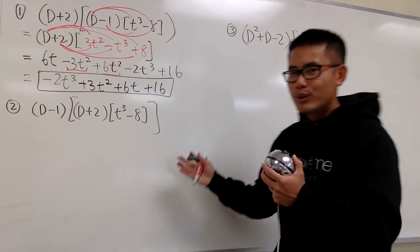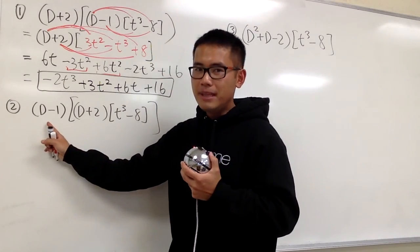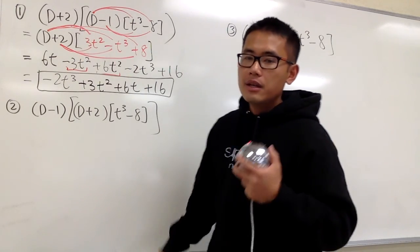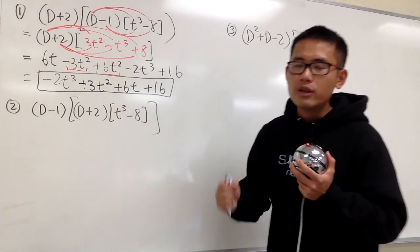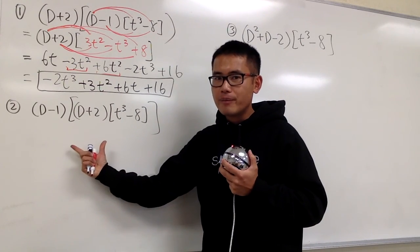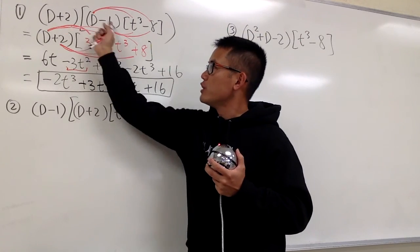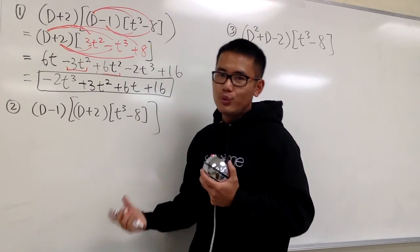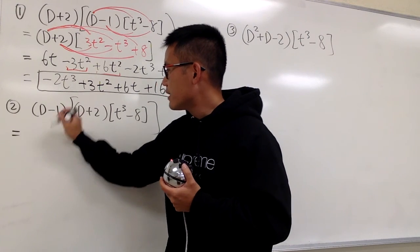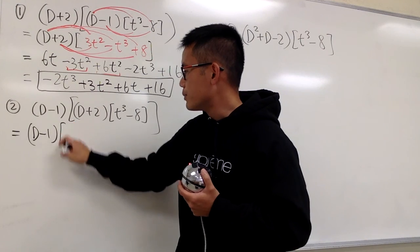For number 2, all I did was switch the order: instead of (D+2)(D-1), it's now (D-1)(D+2). This will demonstrate whether the order of operators matters. We still work inside out, and we'll see if changing the order changes the result.